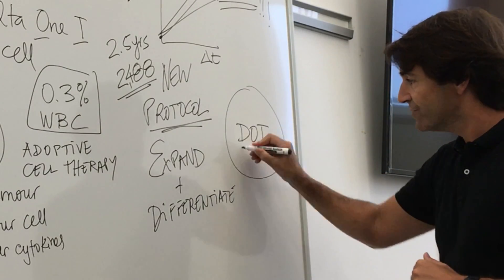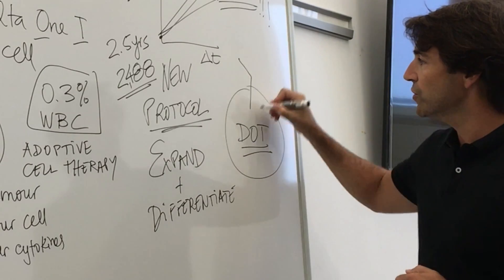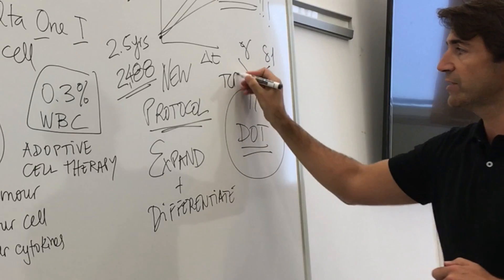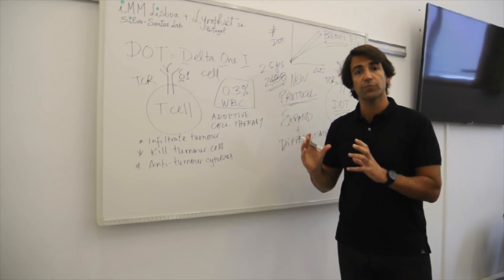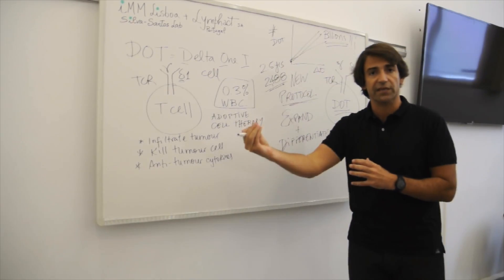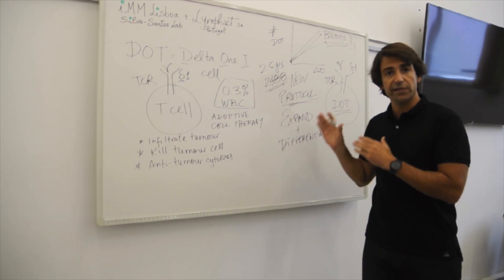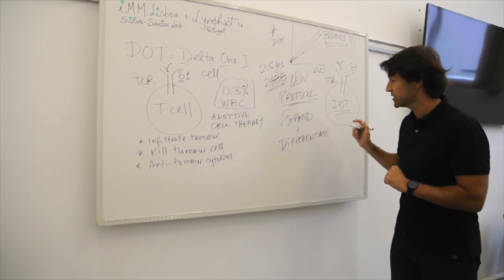And this is what we now call really the DOT cell, which has not only the gamma delta one T cell receptor I told you about, and this is a critical molecule for T cells to recognize the tumor cells, distinguishing them from healthy cells and to mount the anti-tumor effector functions.